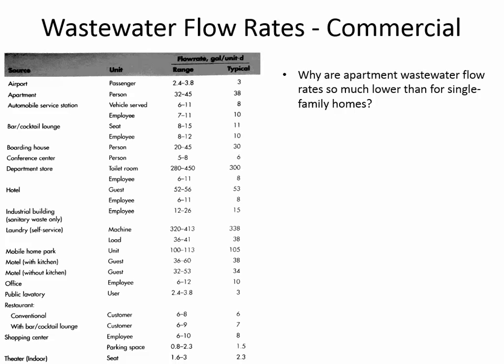Some apartments have laundry hookups, but a lot of them don't — that's a key point. A laundromat is listed separately here; a load of laundry is 38 gallons, so that could be a big chunk of the difference. Apartments are smaller on average — less cleaning — but laundry is probably a big part of it. You were talking about car washing and irrigation; those actually do have an impact on the 103 figure because sometimes the laterals from somebody's house out to the main sewer line can get cracked, and if you're watering your lawn, some water infiltrates into the pipe.